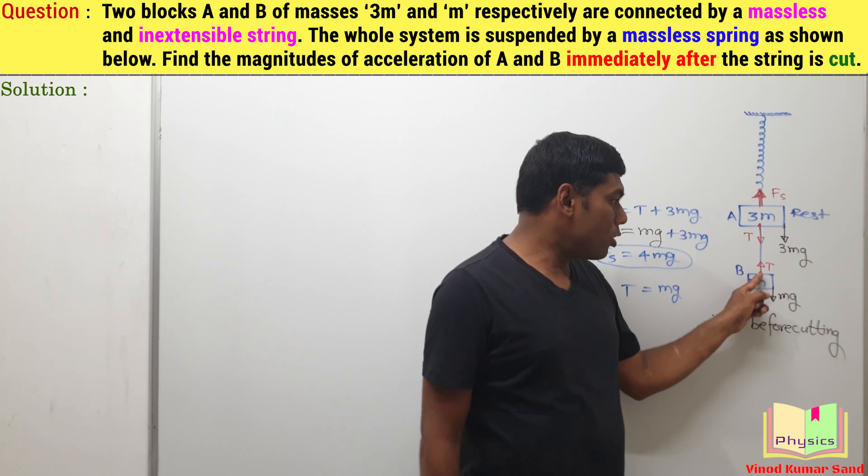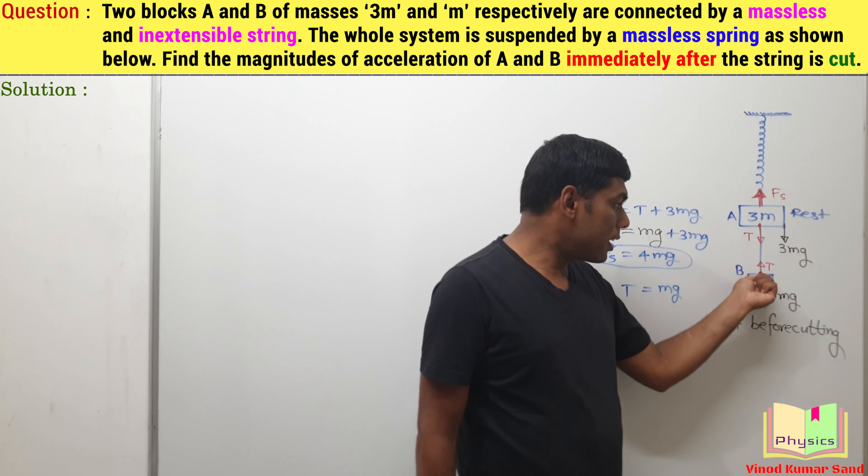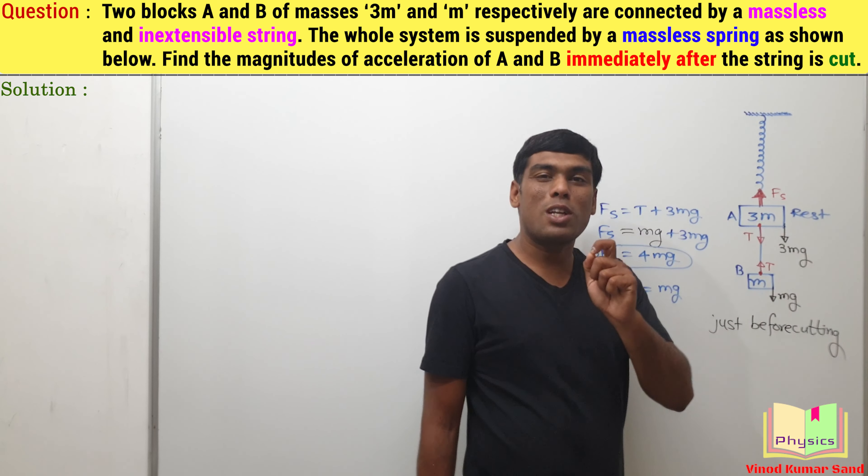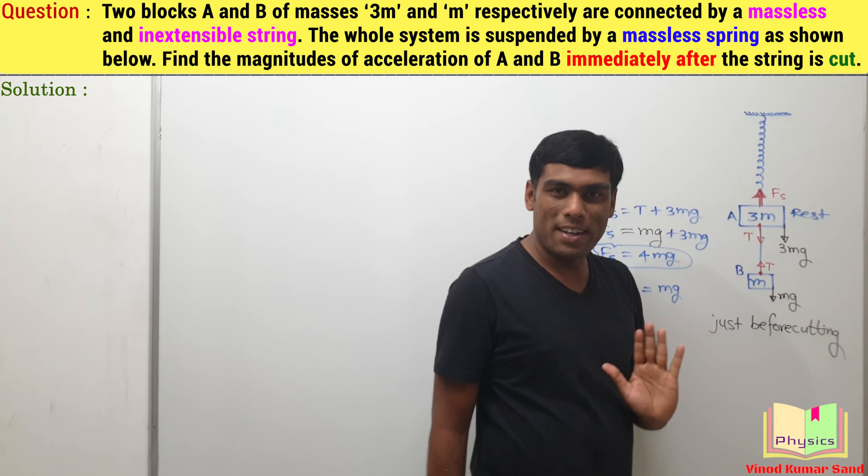And while making the direction of tension, I hope you remember tension in a string is always shown in such a manner so that it can pull, because tension in a taut string can only pull. So the tension is pulling here, the tension is pulling here.